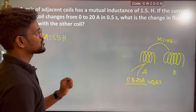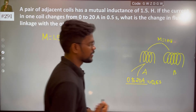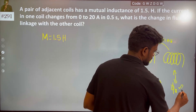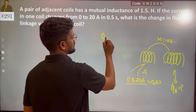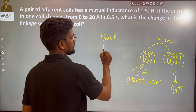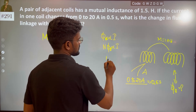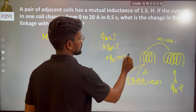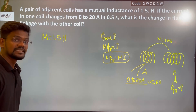What is the change in flux linkage with the other coil? In mutual inductance, flux is directly proportional to current i. The number of turns N gives us NΦB equal to MI, where M is the mutual inductance constant. We have studied this in detail.